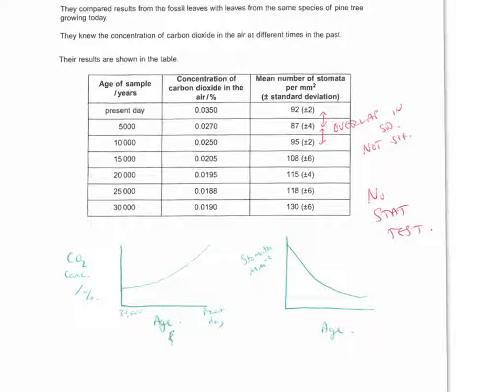And also, from 5,000 years to the present day, we're having an increase in the number of stomata, and we're also having an increase in the concentration of CO2. So here we've got positive correlation, and here we've got positive correlation, going against the overall negative correlation trend.